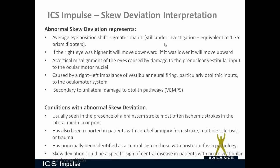If the right eye was higher when you first did the test, it will move downward when the eye is covered. If the right eye is lower, it will move upward. A vertical misalignment of the eyes is caused by damage to the pre-nuclear vestibular input of the ocular motor nuclei, caused by a right-left imbalance of the vestibular neural firing, particularly otolithic inputs of the ocular motor system, secondary to unilateral damage to otolith pathways.